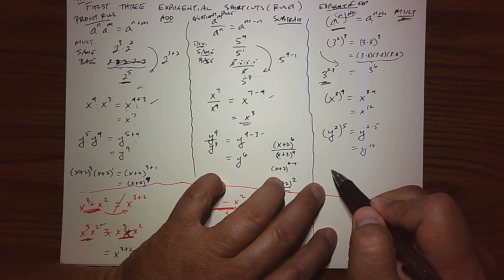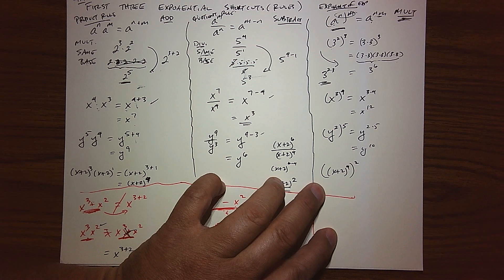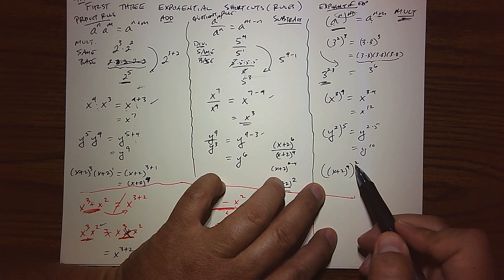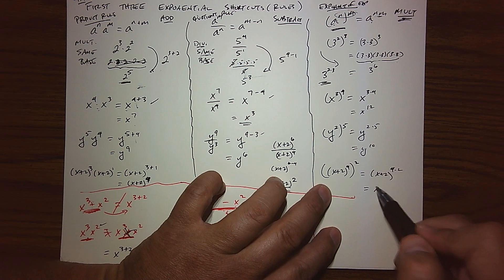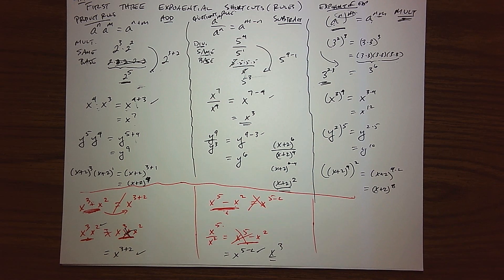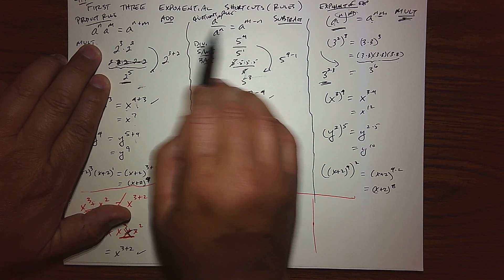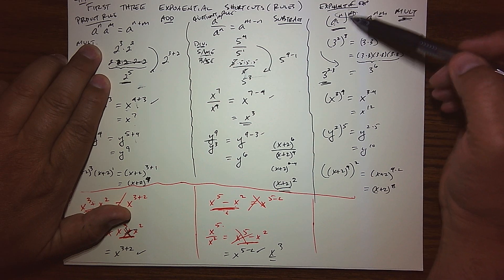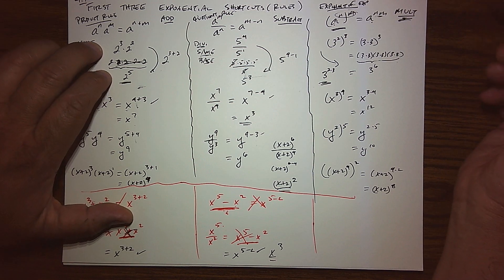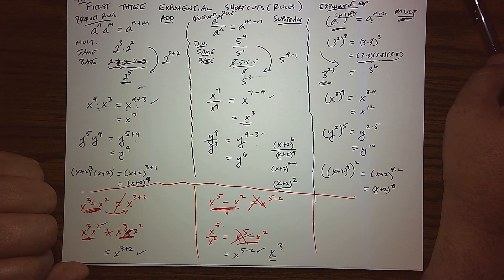Getting a little crazy: if we see x plus 2 to the fourth, and we squared that, we have a power of a power — an exponential. So keep that big base and multiply the exponents, giving x plus 2 to the eighth. Those are our three top rules — you'll find you'll use these a lot. Product rule: keep the base and add the exponents. Quotient rule: keep the base and subtract the exponents, top minus bottom. Exponent rule: power of a power, keep the big base and multiply the exponents. Some more rules and shortcuts coming up, but that should get you started on the first big three. See you in the next video.